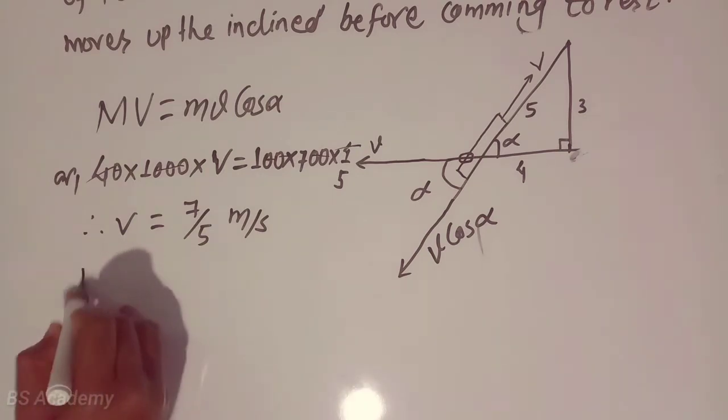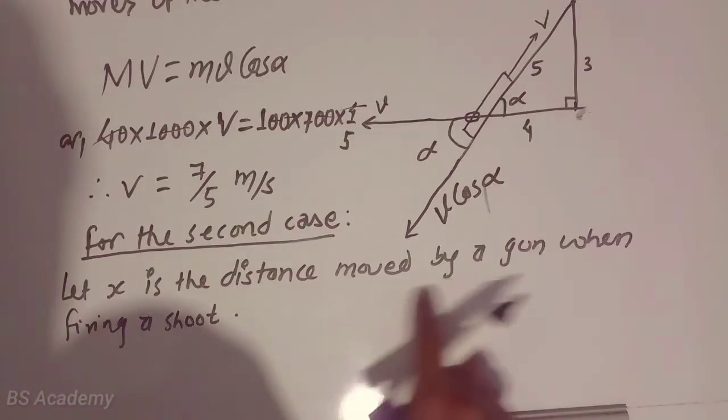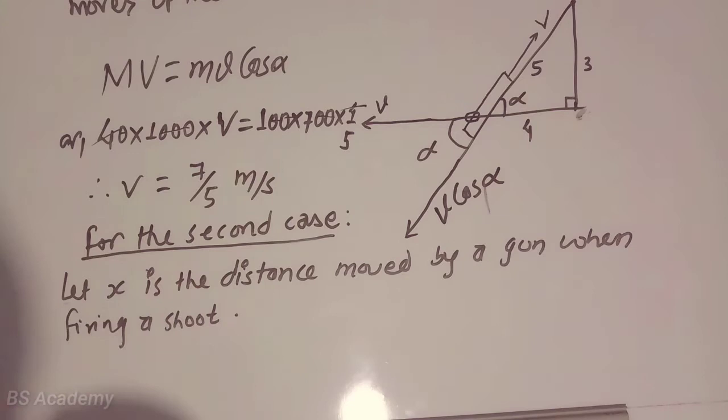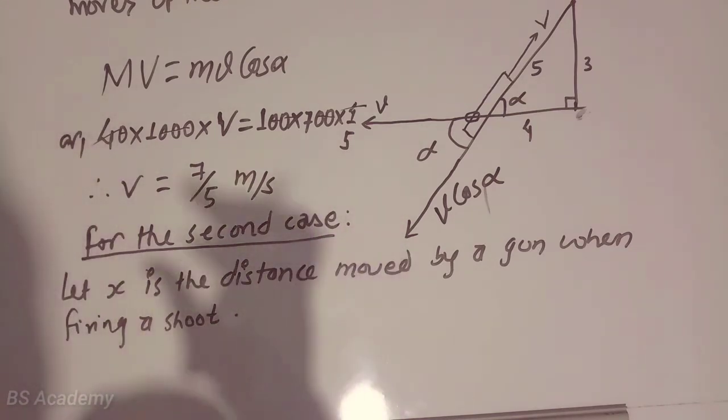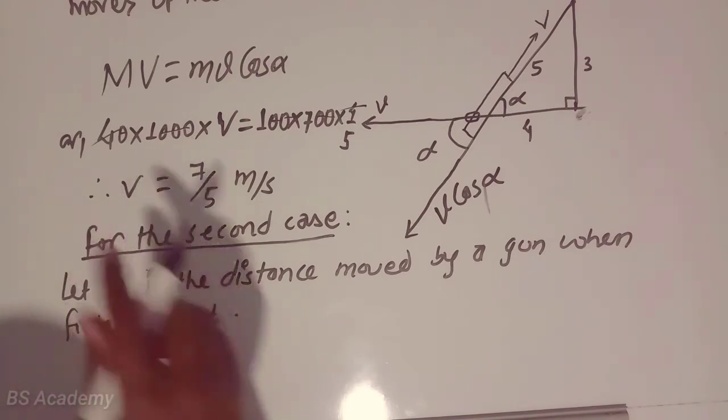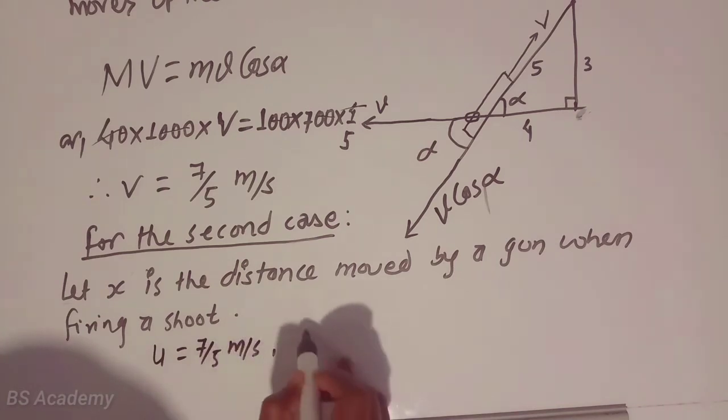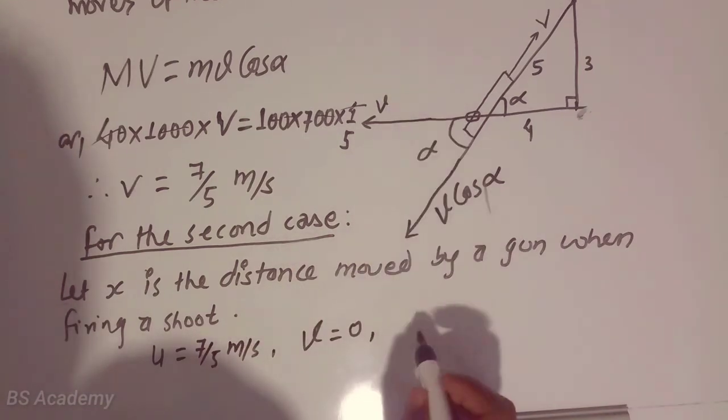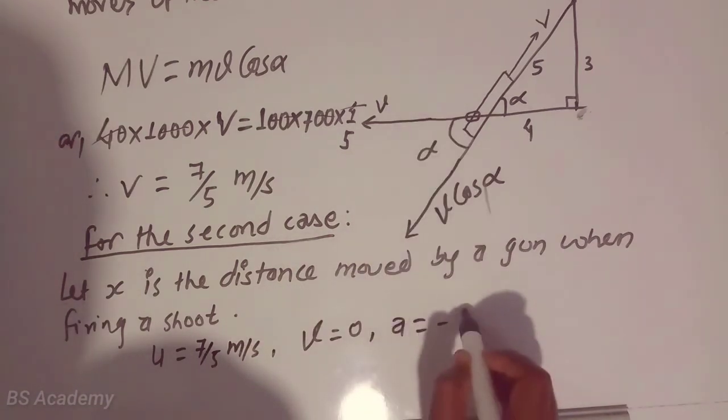For the second case, we have to calculate the distance it moves up the inclined before coming to rest. Suppose x is the distance moved by a gun when firing a shot. That means after moving some distance it will be at rest. This is the initial velocity for the gun, 7/5 meters per second.